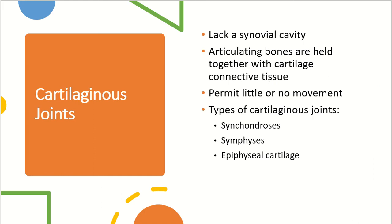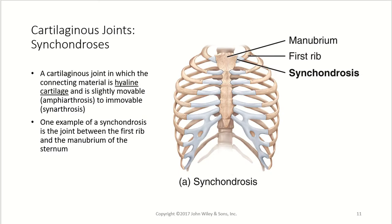The next type of joint is a cartilaginous joint. These lack synovial cavities, the articulating bones are held together with cartilaginous connective tissue, and they permit little to no movement. Types include synchondroses, symphyses, and epiphyseal cartilage. A synchondrosis is a cartilaginous joint where the connecting material is hyaline cartilage, ranging from slightly movable to immovable. A great example is the joint between the first rib and the manubrium of the sternum, forming that cartilaginous joint.